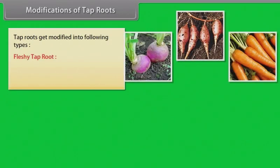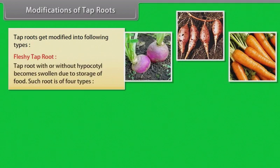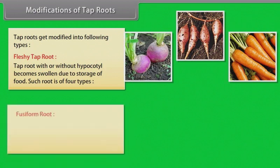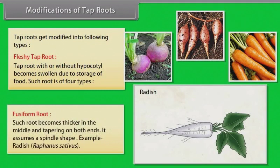Fleshy tap root: Tap root with or without hypocotyl becomes swollen due to storage of food. Such root is of four types. Fusiform root: Such root becomes thicker in the middle and tapering on both ends, assuming a spindle shape. Example: radish (Raphanus sativus).